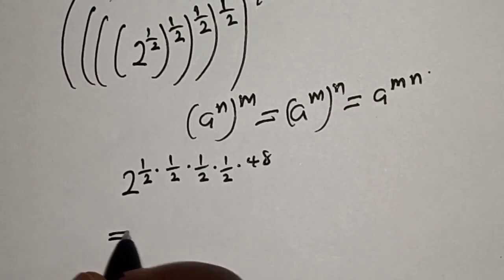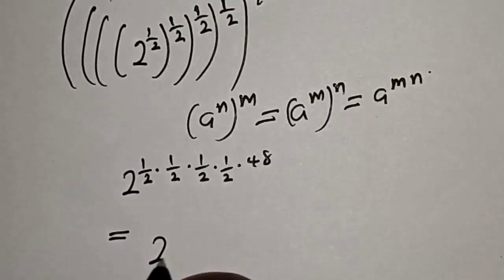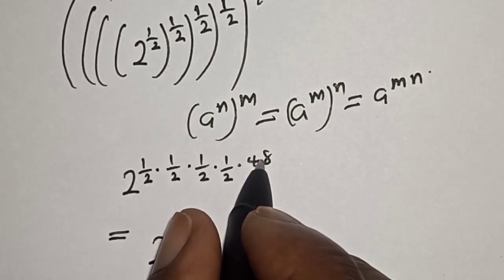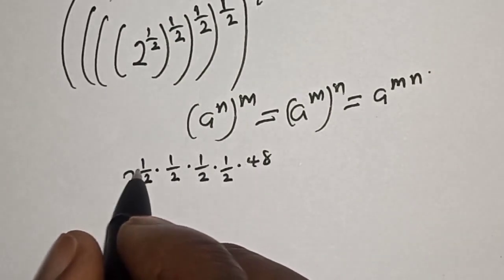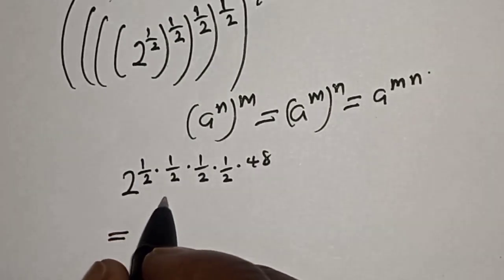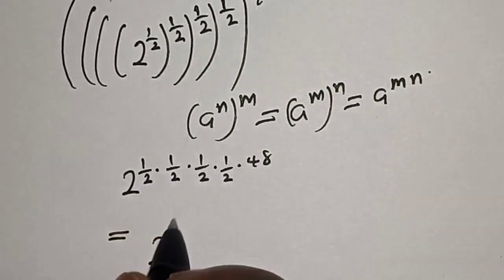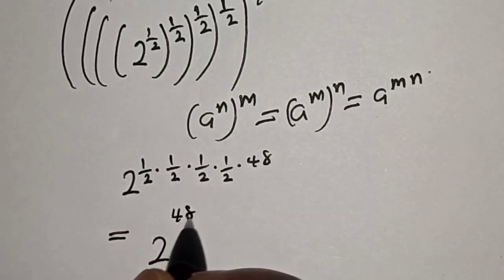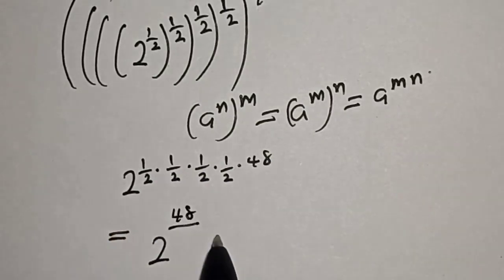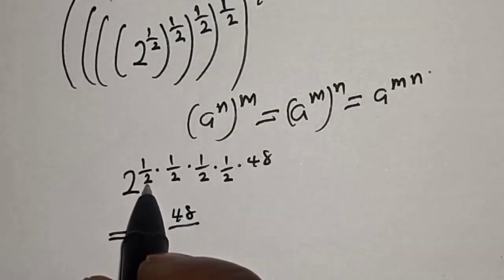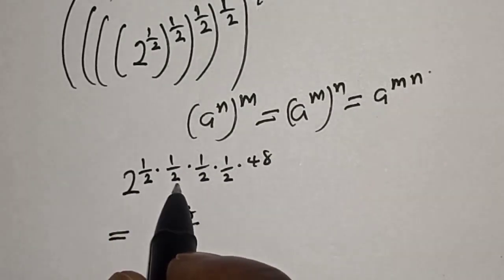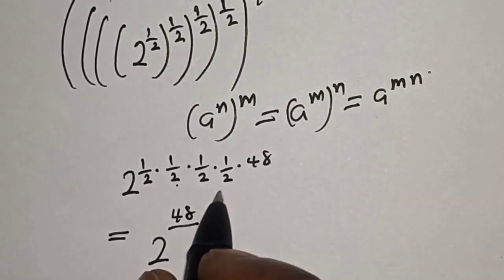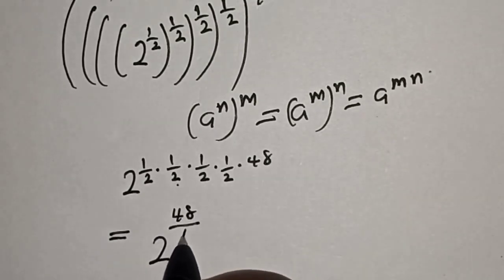This is equal to 2 raised to the power: if you multiply 48 by 1 times 1 times 1 times 1, we have 48 in the numerator, then over 2 times 2 is 4, times 2 is 8, times 2 is 16.